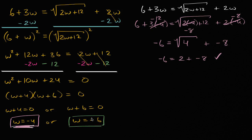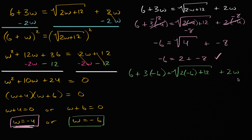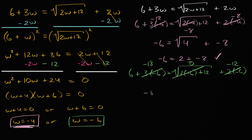Let's try w equals negative six. We're going to have six plus three times negative six equals the square root of two times negative six plus 12 plus two times negative six. This is negative 18 on the left. Two times negative six plus 12 is zero, so the square root of zero is zero. And two times negative six is negative 12. So you get six plus negative 18, which is negative 12, is equal to zero plus negative 12, which is negative 12. That is absolutely correct. So these are actually both solutions to our original radical equation.